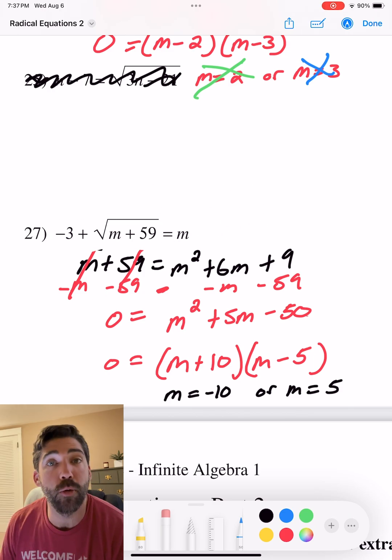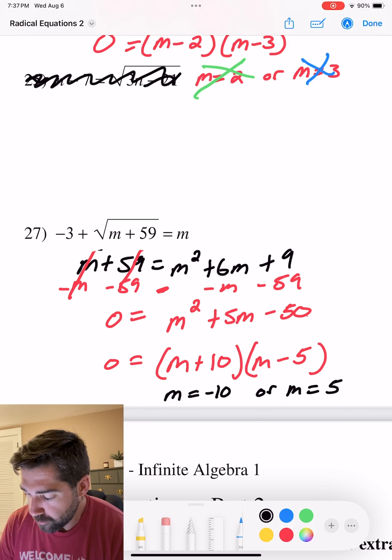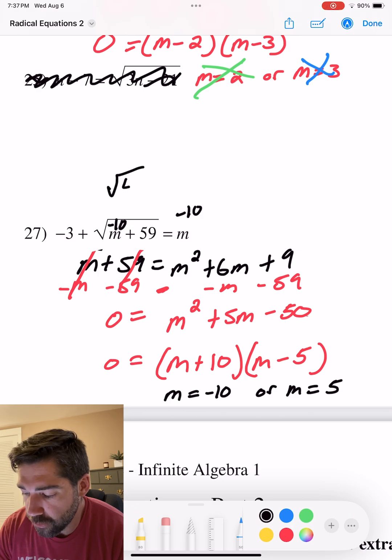Now let's plug it in to check which solution is correct, or maybe they're both correct. Here we go. Plugging in negative 10. Negative 10 and 59 is the square root of 49.